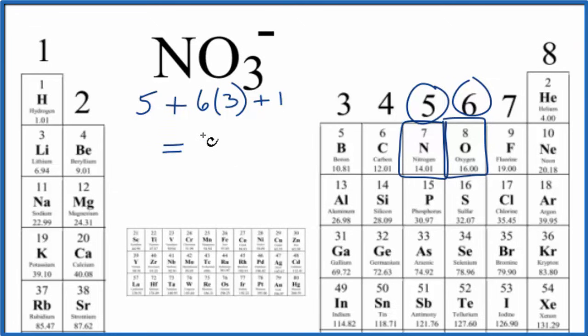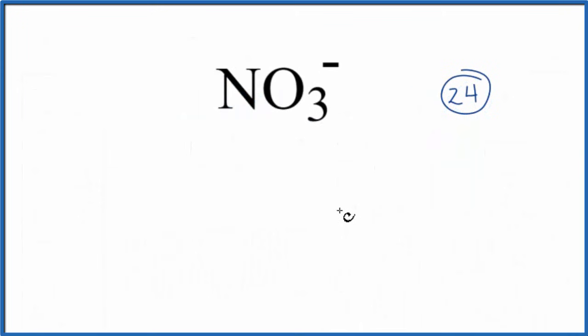We'll put the least electronegative element in the center of our Lewis structure. That's the nitrogen. And then we'll put three oxygen atoms around it.